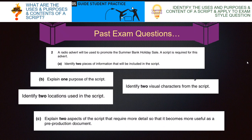Let's have a look at some past exam questions that have been asked. I don't expect you to answer these now — we'll go through them as we go through the lesson. A radio advert will be used to promote the summer holiday sale. A script is required for the advert. Identify two pieces of information that will be included in the script. Explain one purpose of the script. Identify two locations used in the script. Identify two visual characters used in the script. Explain two aspects of the script that require more detail so that it becomes more useful as a pre-production document. So let's have a look at how we answer these questions.